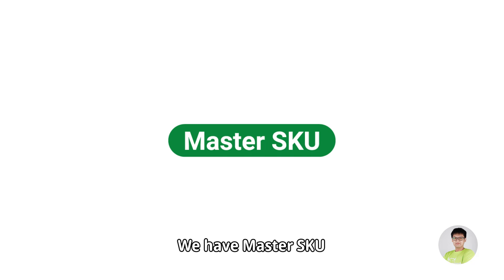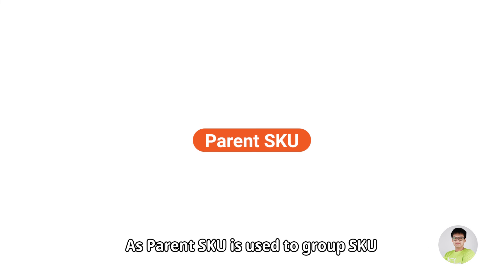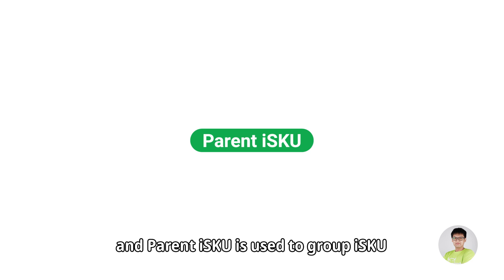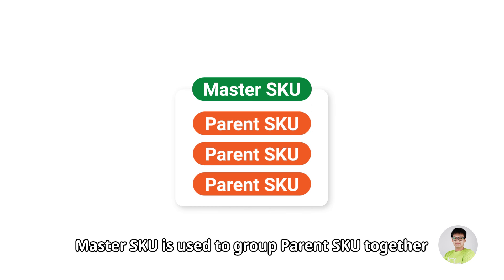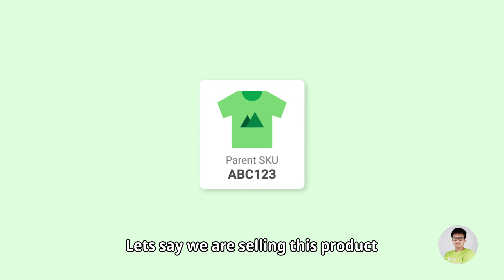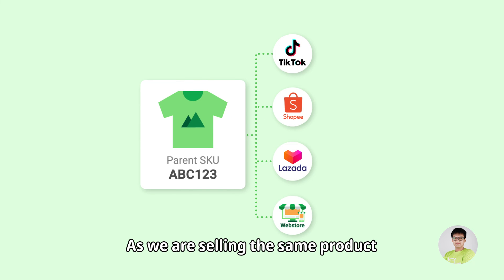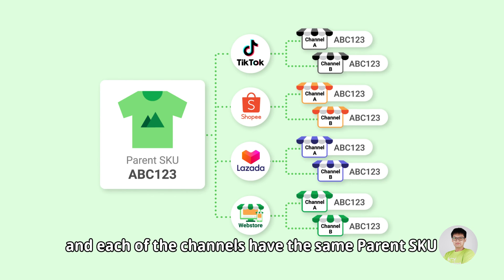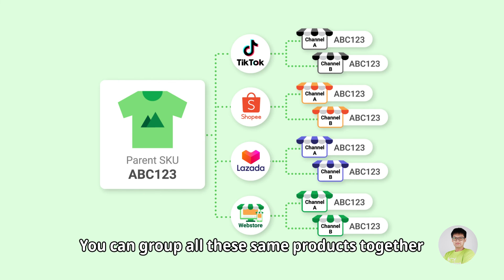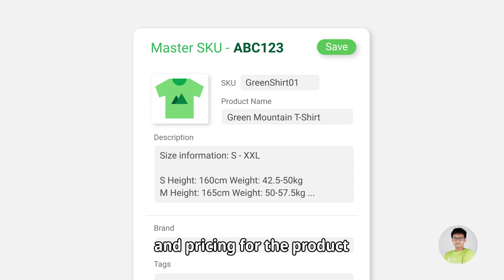Lastly, we have Master SKU. This is a feature that is only available inside SiteGiant. As Parent SKU is used to group SKU, and Parent ISKU is used to group ISKU, Master SKU is used to group Parent SKUs together. Let's say we are selling this product with a Parent SKU of ABC123. As we are selling the same product across multiple channels and marketplaces, and each of the channels have the same Parent SKU, you can group all these same products together using Master SKU, and you will then be able to update product details and pricing easily through Master SKU.